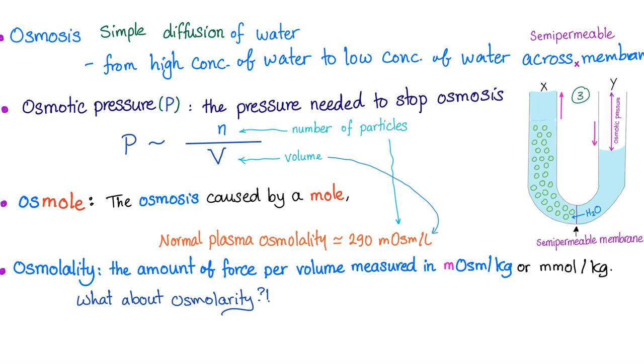So, let's have some definitions. Osmosis, simple diffusion of water. From high concentration of water to low concentration of water across a semi-permeable membrane. Osmotic pressure, the pressure needed to stop osmosis. It's directly proportional to number of particles. The higher the number of particles, the greater the osmotic pressure.